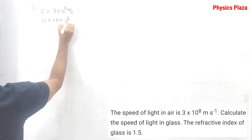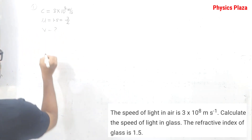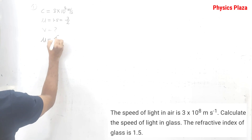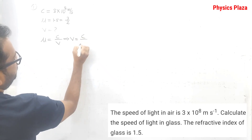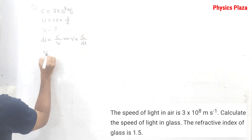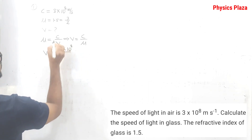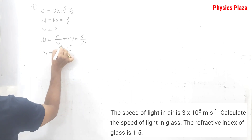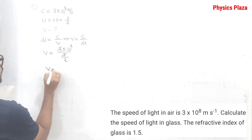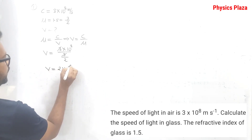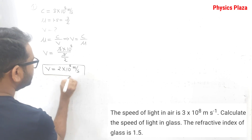The refractive index 1.5 can be written as 3 by 2. They are asking us to calculate the speed of light in glass. Using the relation μ = c/v, we get v = c/μ. Substituting, v = 3 × 10⁸ divided by 3/2. The 3s cancel, and we get v = 2 × 10⁸ meter per second. This is how we can calculate the speed of light in glass.